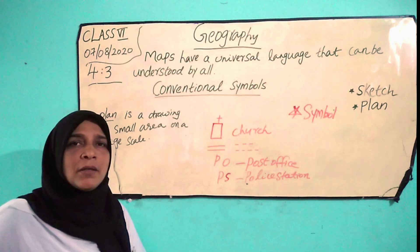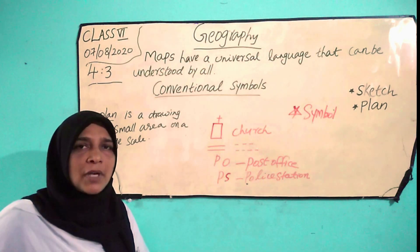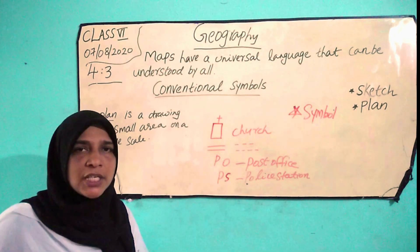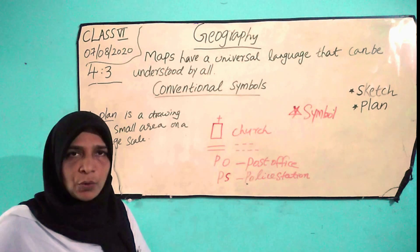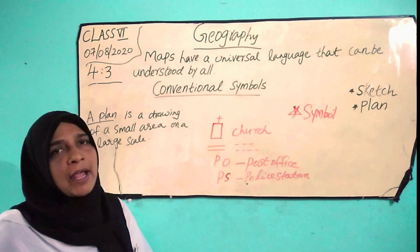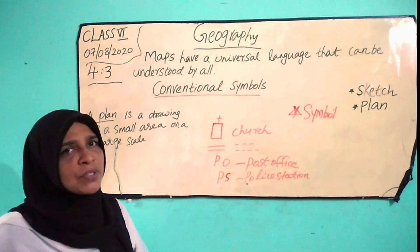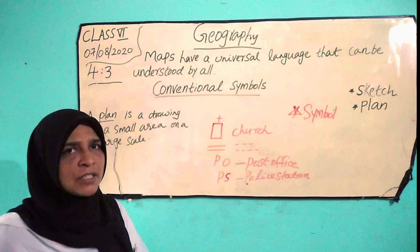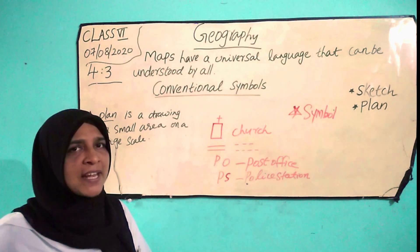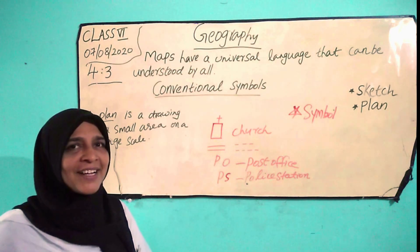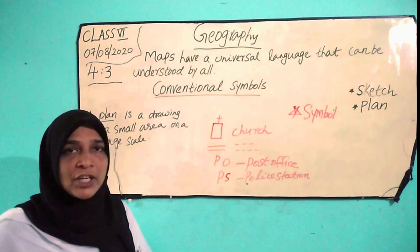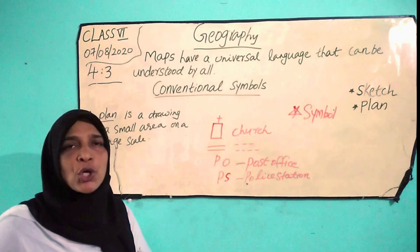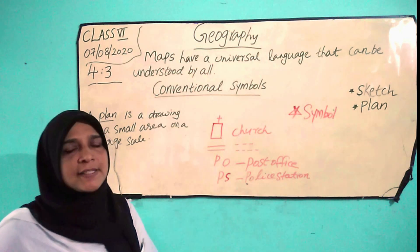Brown color is used to indicate mountains. And which color is used for plains? Green color is used to show plains.